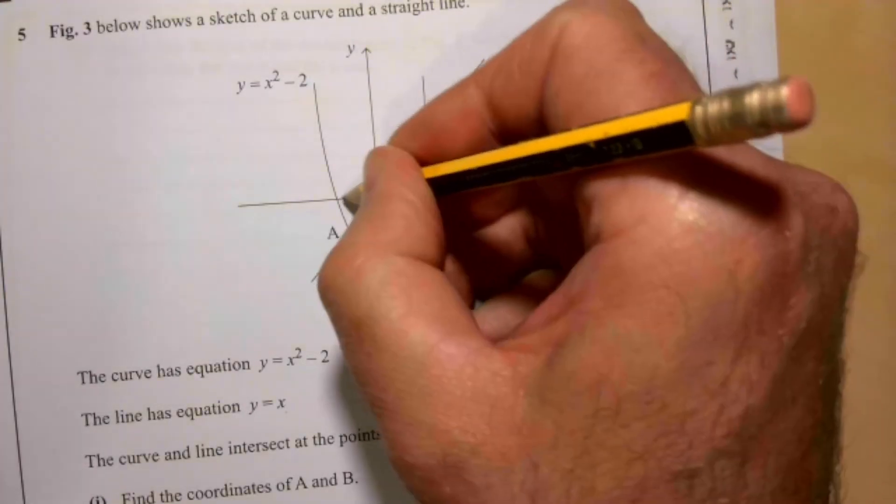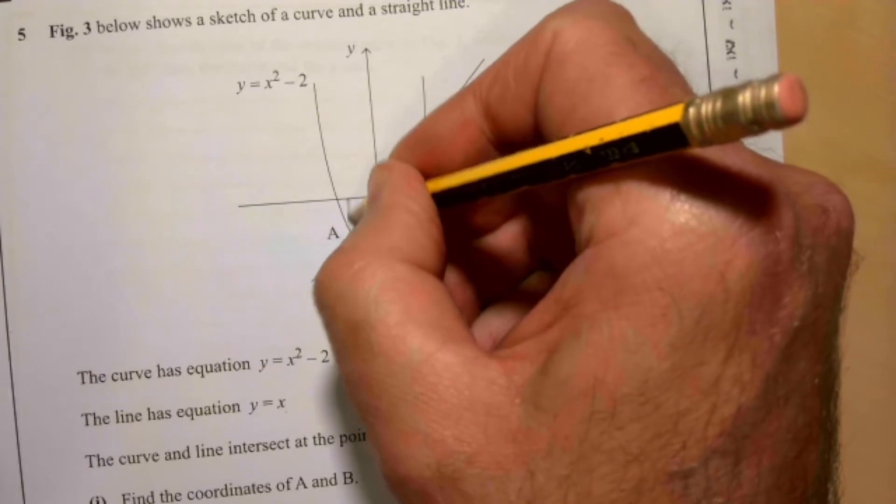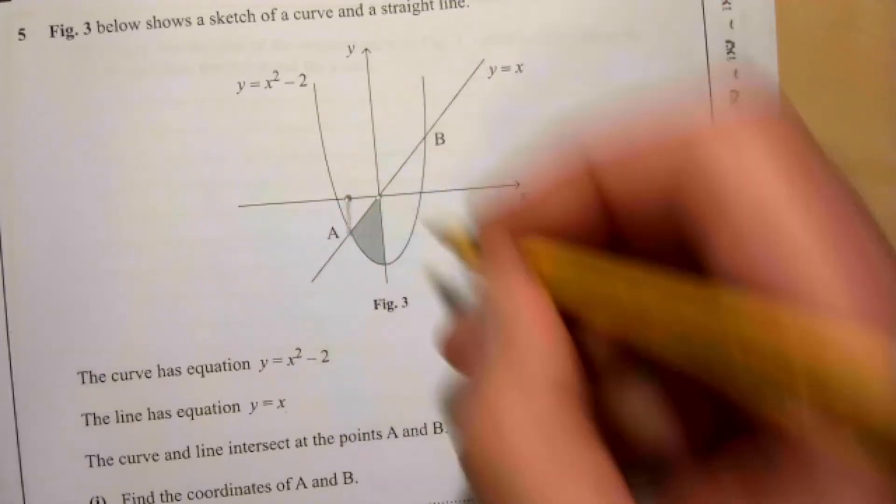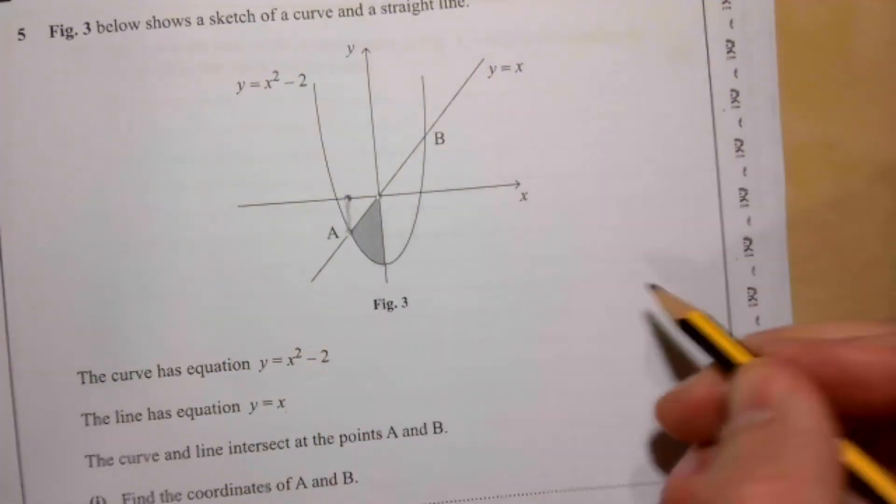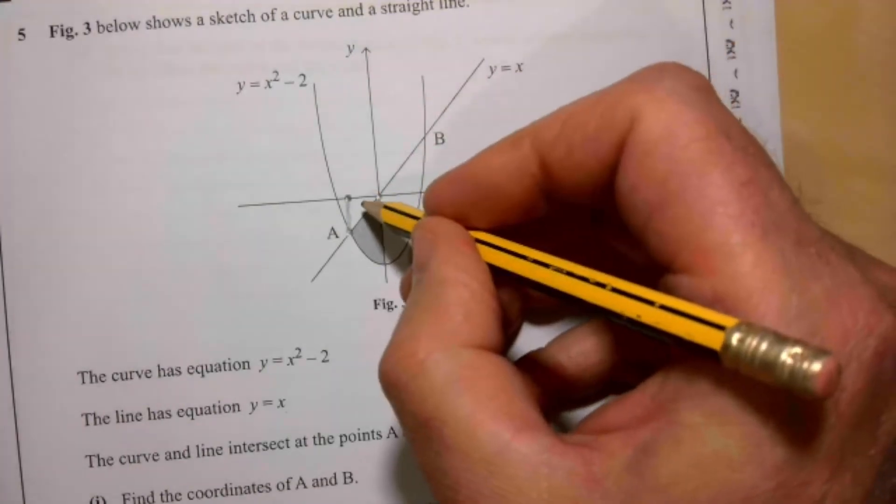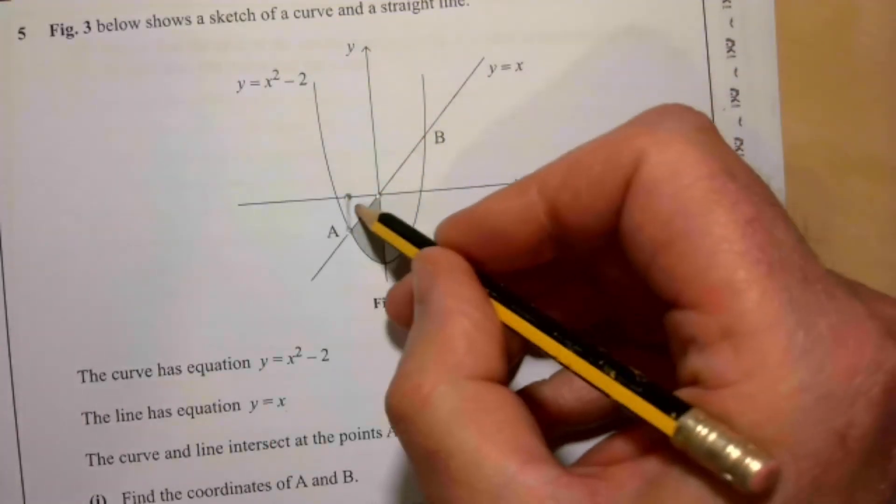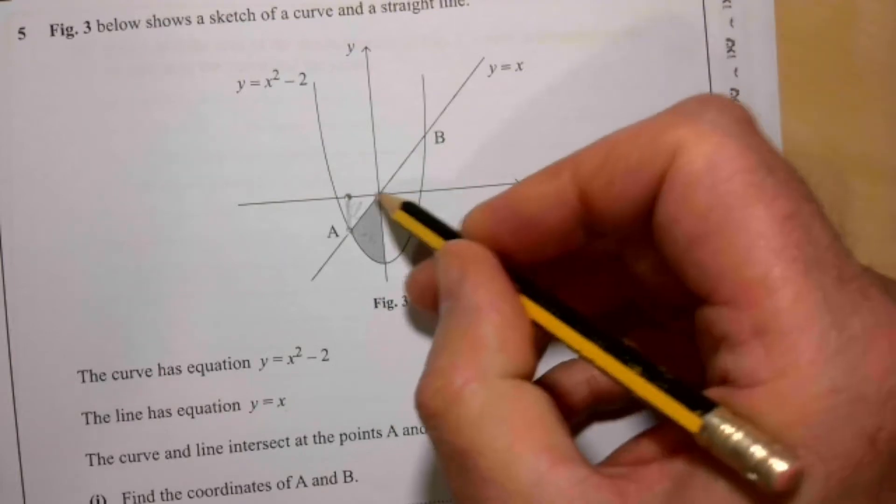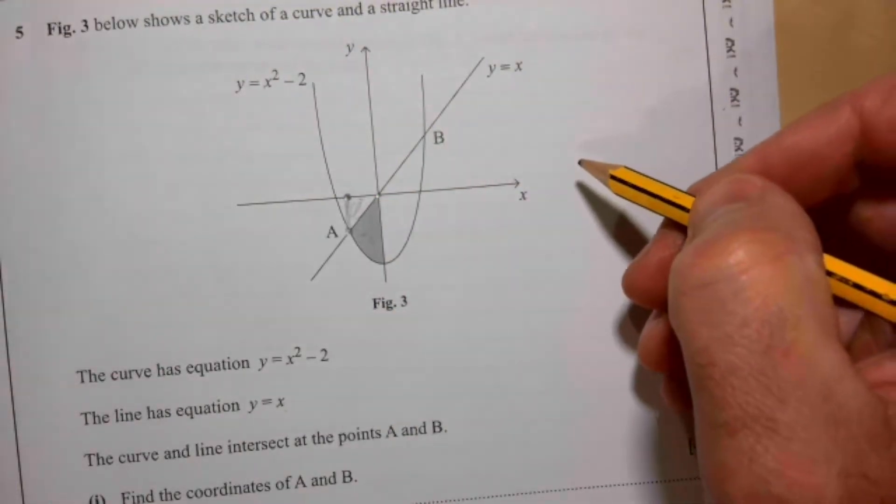We're going to integrate between this point here and this point here, which we've actually just worked out, because that's the point (-1, -1). If we integrate and find the area between that curve, that's going to find us this little bit, and then we're going to take away this wee triangle here.